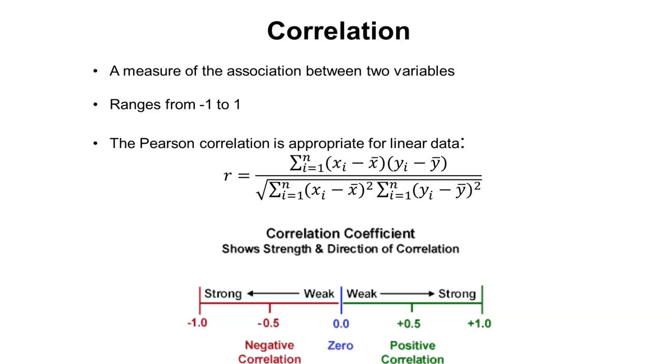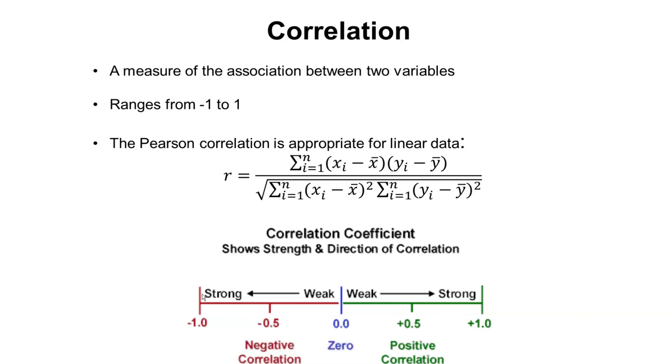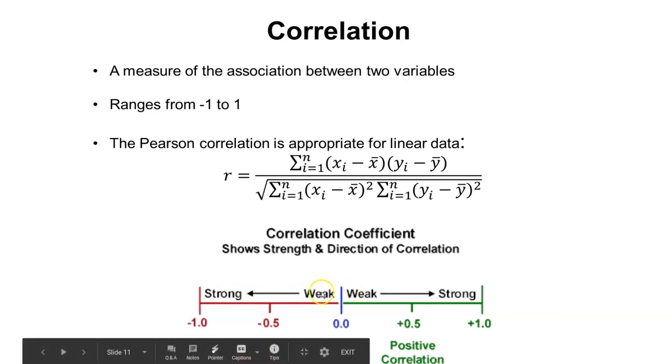We can say that variables have a strong correlation if they have a correlation closer to 1. They could have a strong negative correlation if they have a value closer to negative 1. If the correlation between two variables is 0, then there's a weak correlation. Anything negative is a negative correlation, anything positive is a positive correlation.